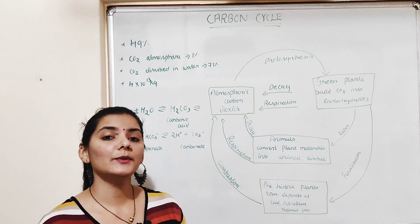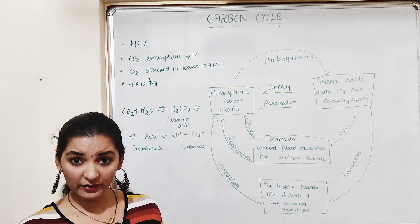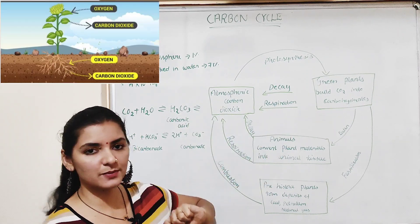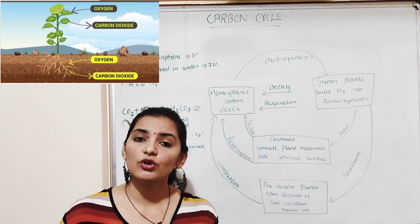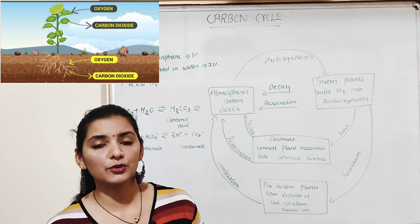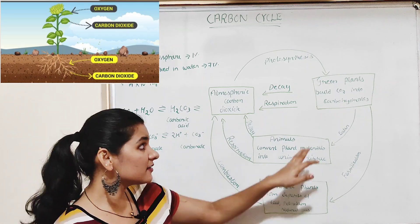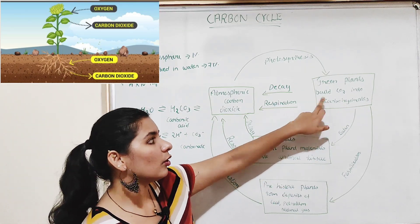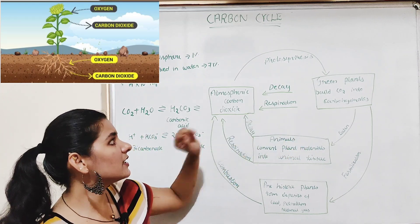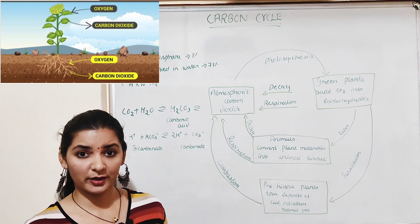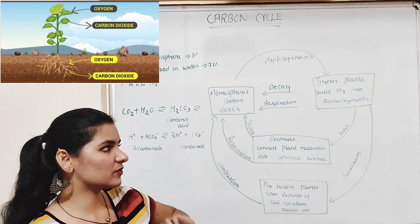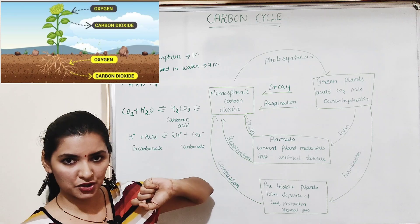Some carbon returns to the atmosphere in the form of carbon dioxide as a result of respiration by the plant. Plants also respire and produce carbon dioxide as a byproduct, which is released back into the atmosphere.